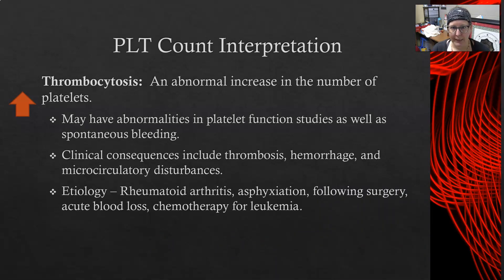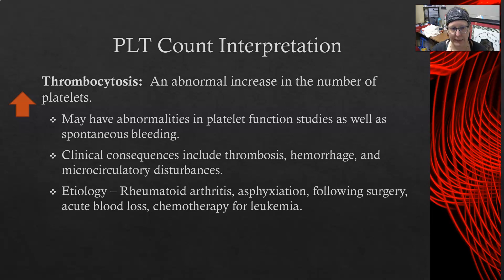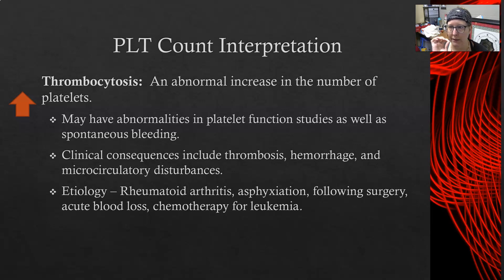Thrombocytosis is an increase in the number of platelets — a high platelet count above 400. You may have abnormalities in platelet function studies with thrombocytosis, as well as spontaneous bleeding even though there are so many platelets, because a lot of them are non-functional. The clinical consequences of thrombocytosis include thrombosis (clot formation), hemorrhage (bleeding), and microcirculatory disturbances — meaning platelets can form plugs in the capillary circulation, which can cause problems.